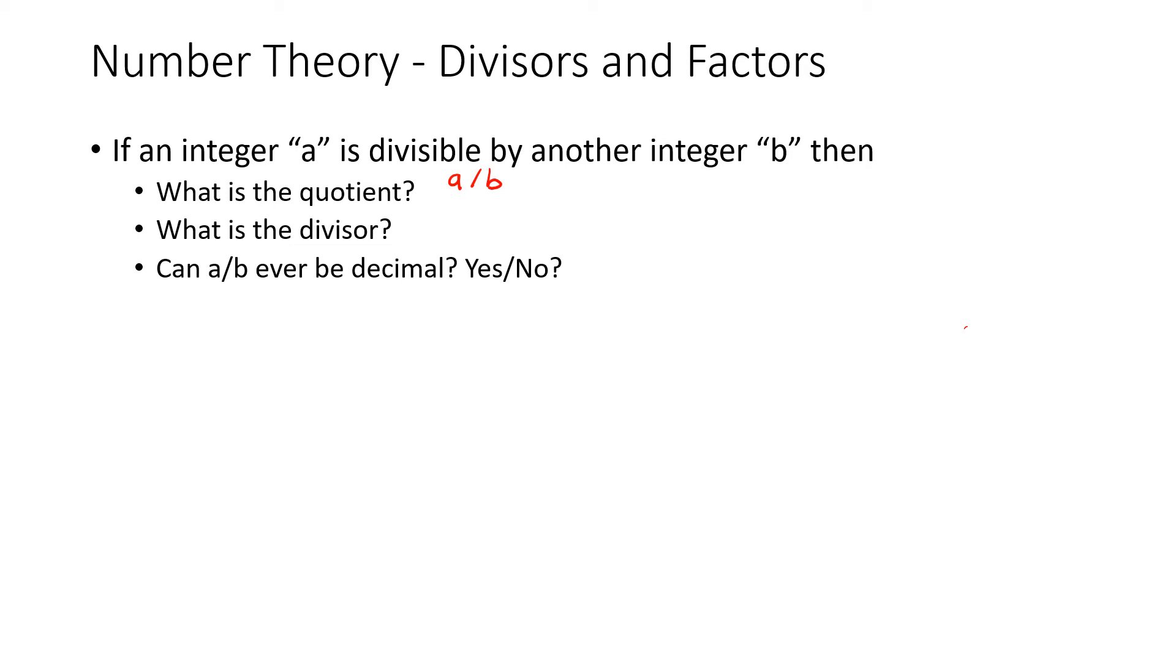The quotient is basically a divided by b. The quotient is the result from the division. So if I take an example, say a is 4 and b is 2, then our quotient would be 4 divided by 2, which is 2.